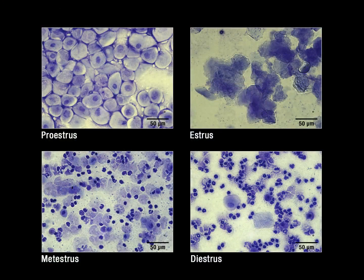Here we describe how to identify the stage of the reproductive cycle of female mice on any given day by simple, non-invasive cytological assessment of the predominant cell type present in vaginal smears.